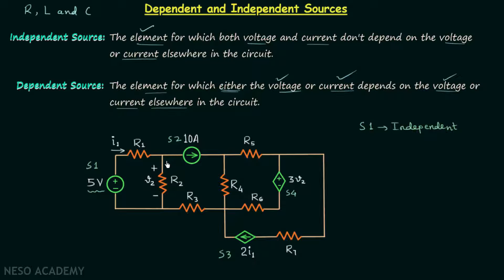Source S2 is a current source providing 10A of current. Again, the value of the current is not depending on the current or voltage present in any other part of the circuit, so source S2 is also an independent source.